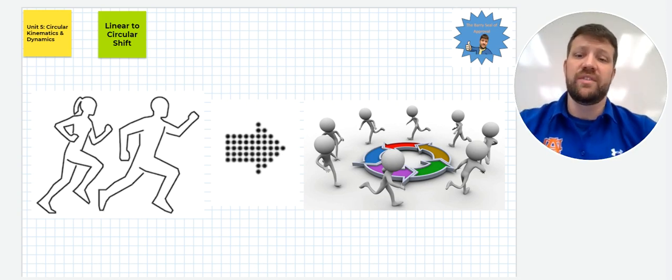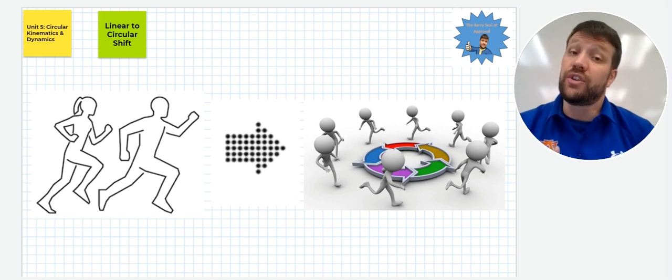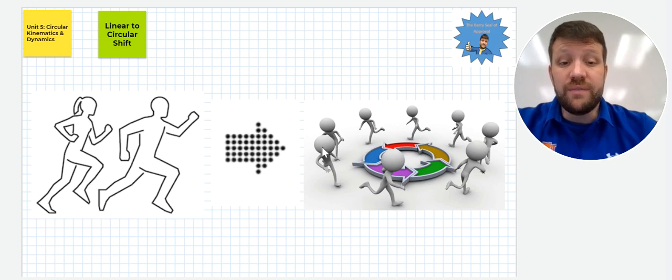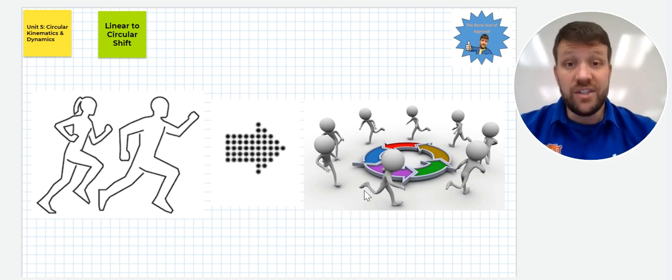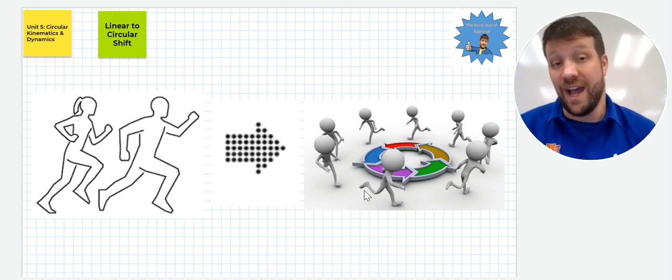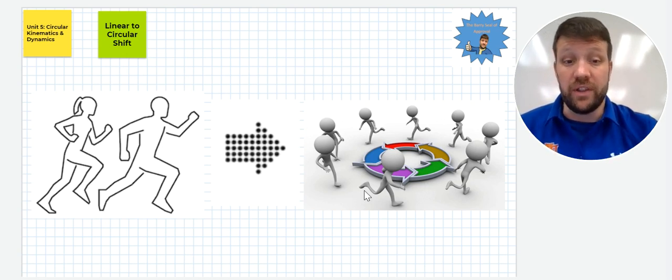First thing we have to do here is make this shift in our minds from moving in a straight line to moving in a circular path. You see right here we have our runners going in a straight line there. Well, we're going to make that shift as if they're running in a circle now. The action is the same. Forces are still required. Motion is still happening. We're still covering some distance in some amount of time.